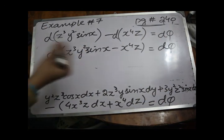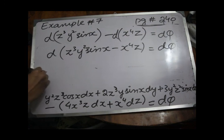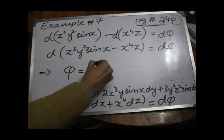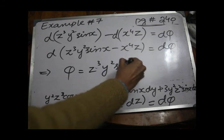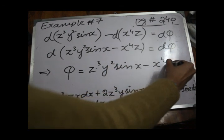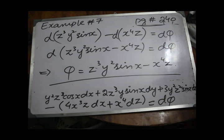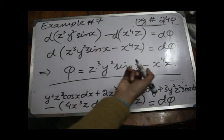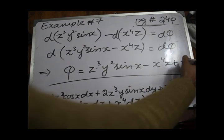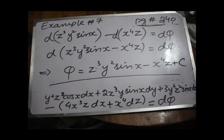Comparing both sides, phi equals z³ y² sin x minus x⁴z. And since we are performing integration (reversing differentiation), we always add a constant of integration. So the final answer is phi equals y² z³ sin x minus x⁴z plus C. Allah Hafiz.